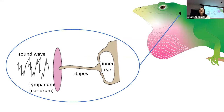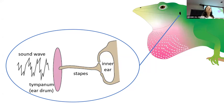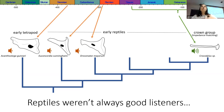Reptiles have taken a really different path in order to hear. Instead of those three bones, reptiles just use one — the stapes. Modern reptiles have a really long and slender stapes that connects the eardrum or tympanum to the inner ear. Sound waves first encounter the tympanum, then travel down the stapes into the inner ear where vibrations are interpreted as sound. This long, slender stapes capable of hearing high frequencies is what we see across most living reptiles today, except for a few weird ones that don't really hear anymore.